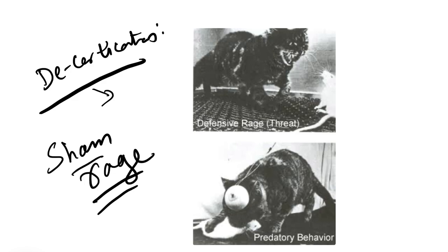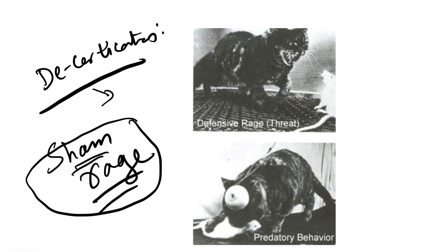Sham means it is falsely projected because there is no emotional component, there is no reason to be violent. Without any reason the animal becomes violent and shows predatory action and anger feelings. This is sham rage. Earlier it was thought the centers were in the cortex, but later it was found that subcortical structures are involved — specially the reward and punishment centers in the hypothalamus.